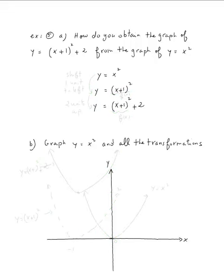In this example, we need to know how to obtain the graph of y equal x plus one squared from the graph of y equal x squared. We're going to write two different transformations. There are two transformations here. We start from y equal x squared and y equal x plus one squared.